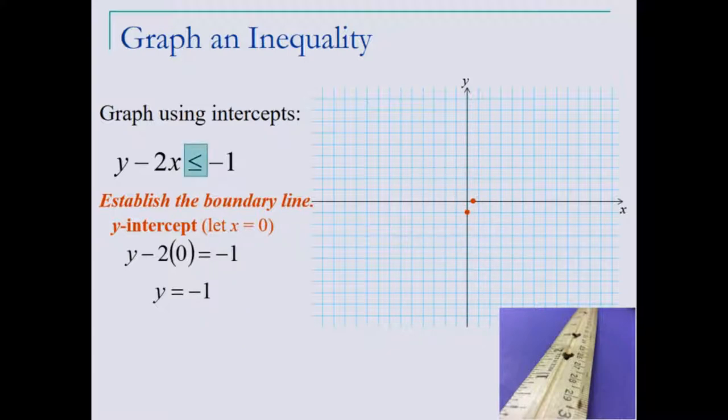Next, since this is a less than or equal to, our line is included in the solution because of the equal sign. So any point on the line is part of the solution, and to indicate that, we draw our boundary line as a solid line.